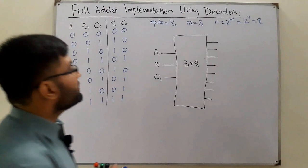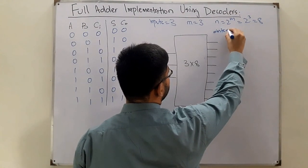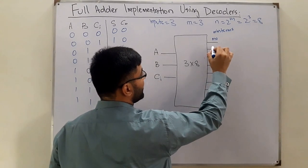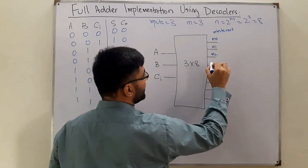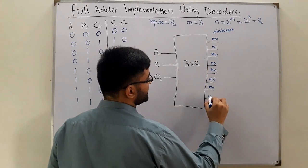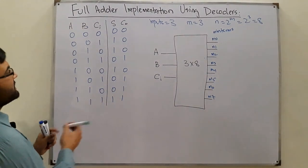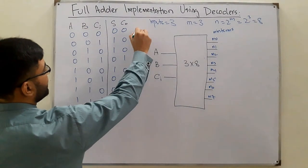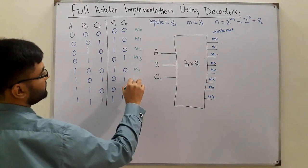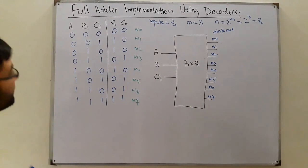What about the output lines? The output lines will be your minterms. Which means this would be m0, m1, m2, m3, m4, m5, m6, and m7. You know that from here which of them are which minterms, so I can write over here also m0, m1, m2, m3, m4, m5, m6, and m7.